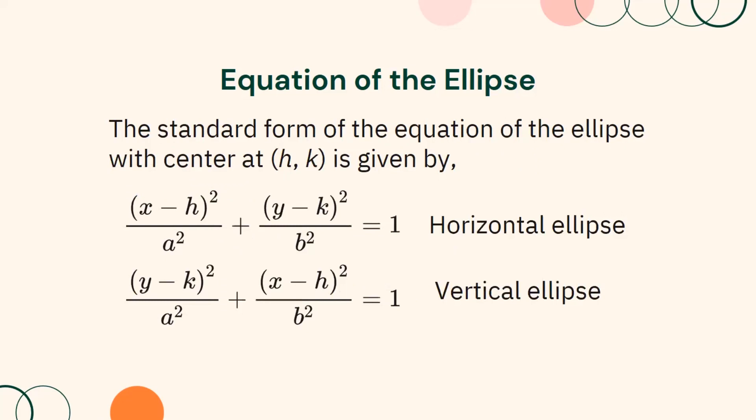The standard form of the equation with center at h, k is given by (x minus h)² over a² plus (y minus k)² over b² equals 1 for a horizontal ellipse, and (y minus k)² over a² plus (x minus h)² over b² equals 1 for the vertical ellipse.